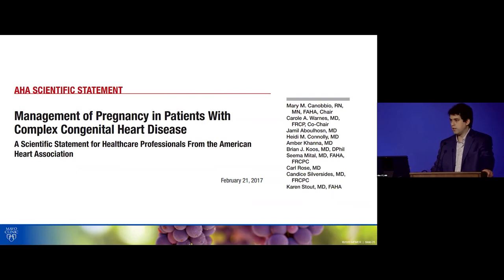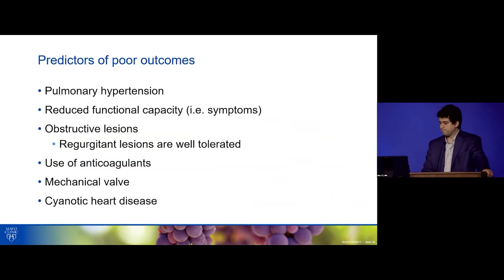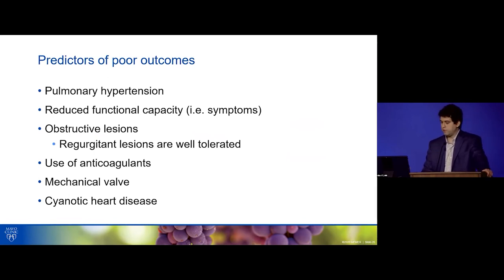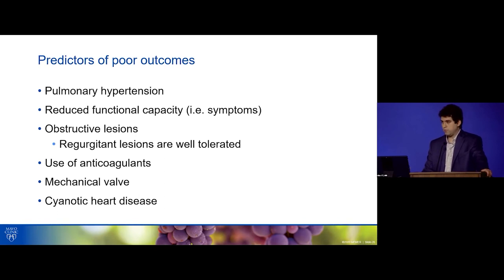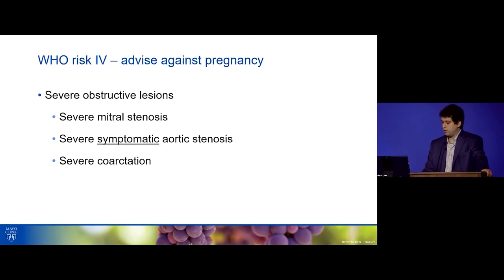There are clear predictors of poor outcome during pregnancy, replicated across several studies: prior cardiac events, reduced functional capacity, obstructive lesions — though regurgitant lesions are generally well tolerated — use of anticoagulant agents, mechanical valves whether aortic or mitral, and cyanotic heart disease. If you see a patient with these features before pregnancy, outcomes may not go well.